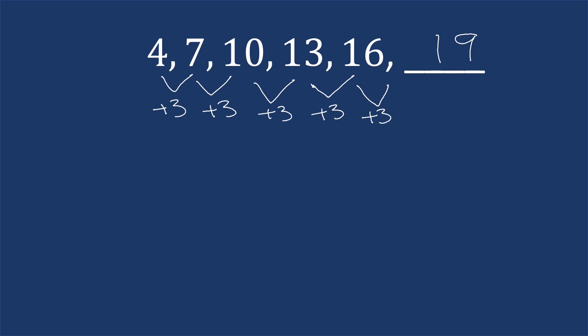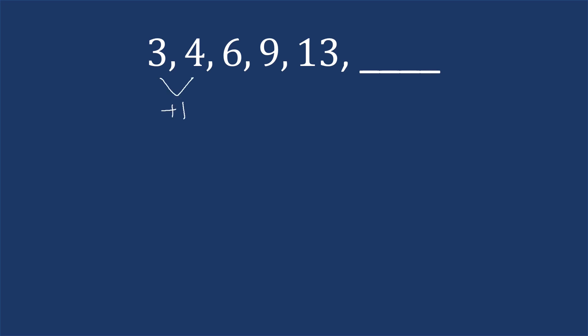Let's take a look at another example. We want to start out and see how the numbers are changing. You go from three to four, that's adding one. Going from four to six, that's adding two. Going from six to nine, that's adding three. And going from nine to thirteen, that's adding four.